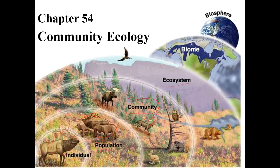An ecosystem is all of that plus the abiotic stuff. So it's the biotic factors plus the abiotic factors. When you put an A in front of something, it means not. So this is the living stuff plus the non-living stuff — the community plus the water, the air, the rocks, whatever else is in the community that's not living — and that would be the ecosystem.